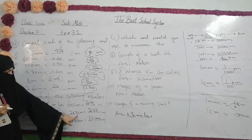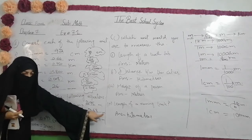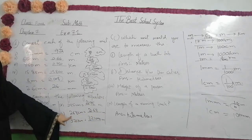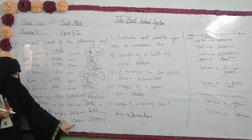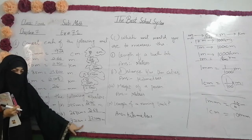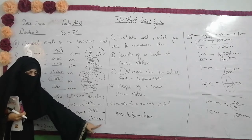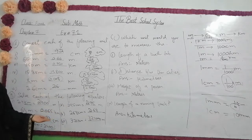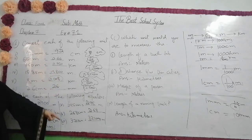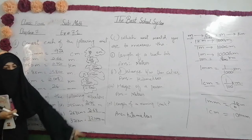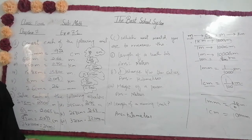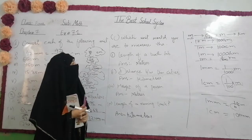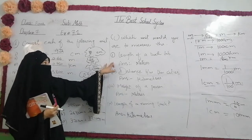Question number 5: 268 centimeters converting to meters. It goes into meters and you divide by 100, so the answer is 2.68. Last question: 325 kilometers. You go into meters, and you multiply by 1,000.